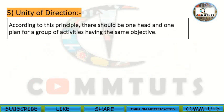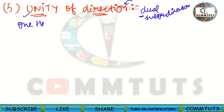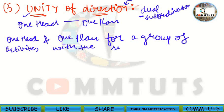Now let's understand the fifth principle, which is unity of direction. This principle is an extension of unity of command — we should avoid dual subordination in the organization. Unity of direction means there should be one head and one plan for a group of activities with similar objectives.